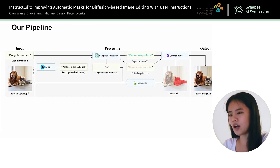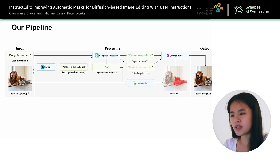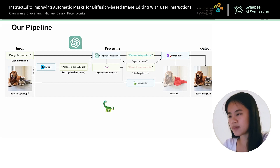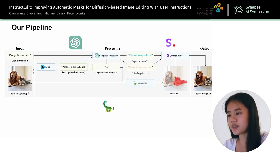This is our pipeline. Our pipeline has three components: a language processor, a segmenter, and an image editor. Given an input image and a user instruction, the language processor first parses the user instruction into a segmentation prompt, an input caption, and an edit caption. The segmenter then produces an image mask based on the segmentation prompt. In this example, the segmentation prompt is 'the cat.' Then the image editor accepts the input caption, edit caption, and the mask to generate the final edited image.